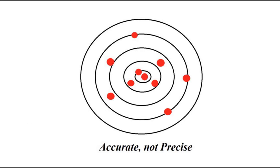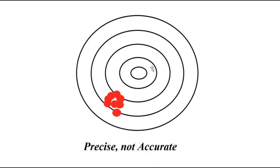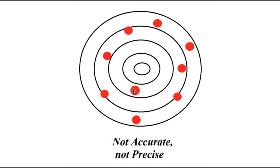In another case, the shooter is not able to hit the middle spot even once, but he is hitting some other spot on a consistent basis. So here the shooter is precise but not accurate. And the worst case scenario is where the shots are scattered all over and the shooter is not even once able to hit the desired target — that is neither accurate nor precise.